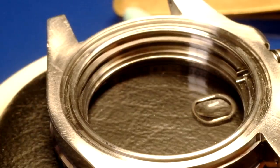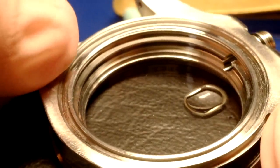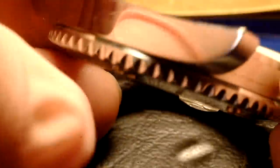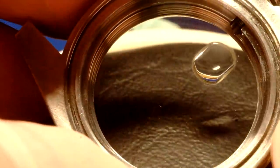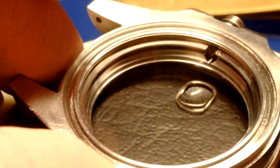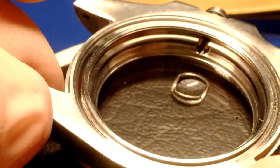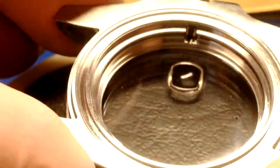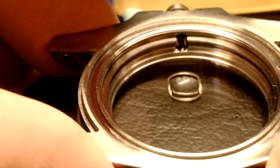One of the first things we do in the service is to ultrasonically clean the case, and as you can see this has come out really nice. We're going to put new gaskets in this now and get this in the pressure testing tank, because of course the Hulk is a Submariner - it needs to keep the water out.